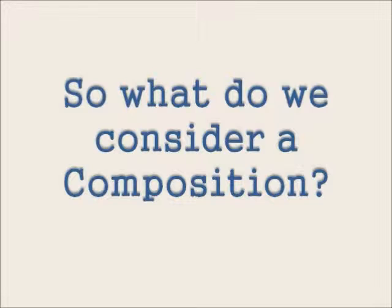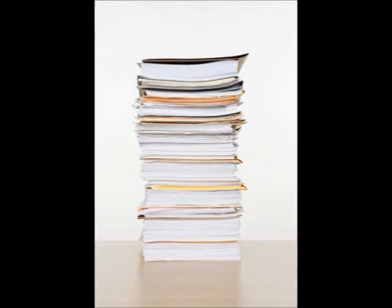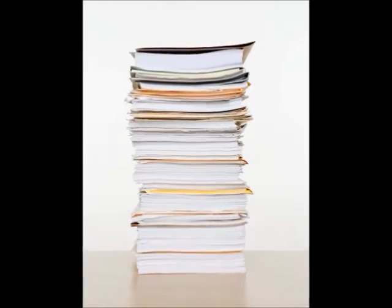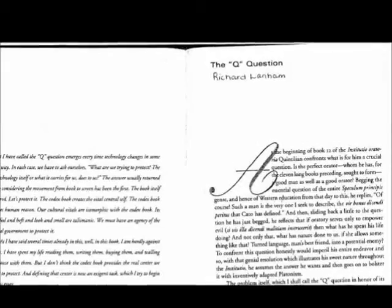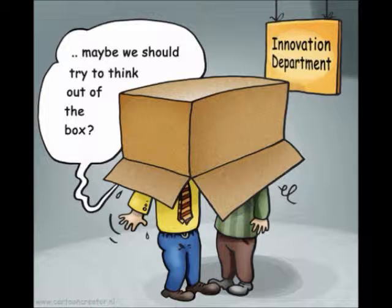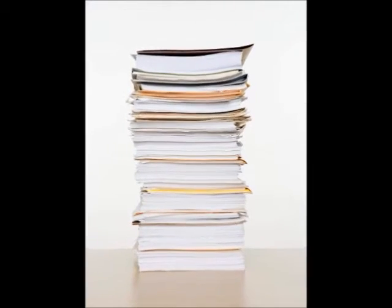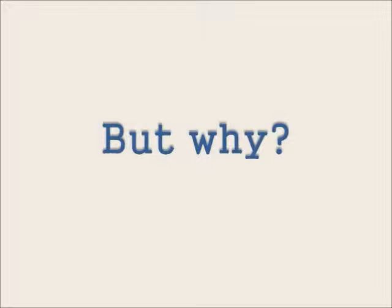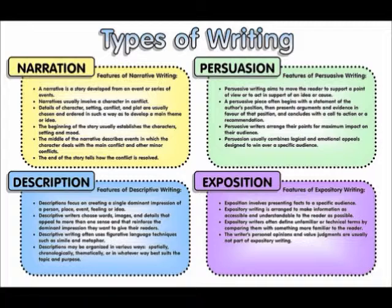For most students and teachers, a composition is a paper — the dreaded writing response: an essay, a research paper, an academic paper, or whatever you want to call it. Richard Lanham addresses this question in the opening of his article on the Q question. He mentions that the gut reaction people have when we try to think outside the composition box is that we must protect traditional writing. Protect the book. The book is sacred. But why must papers and books be held on to with death grips? Types of writings have clearly changed, so why not the medium itself?